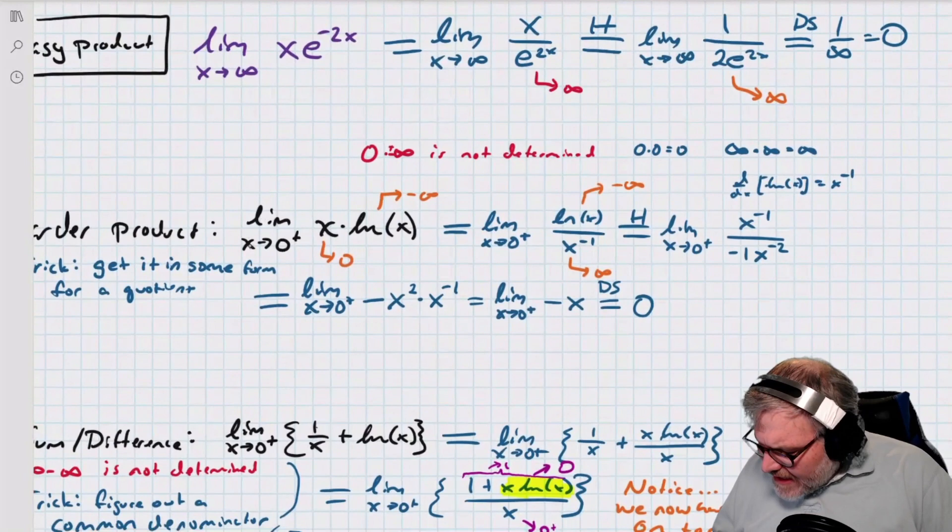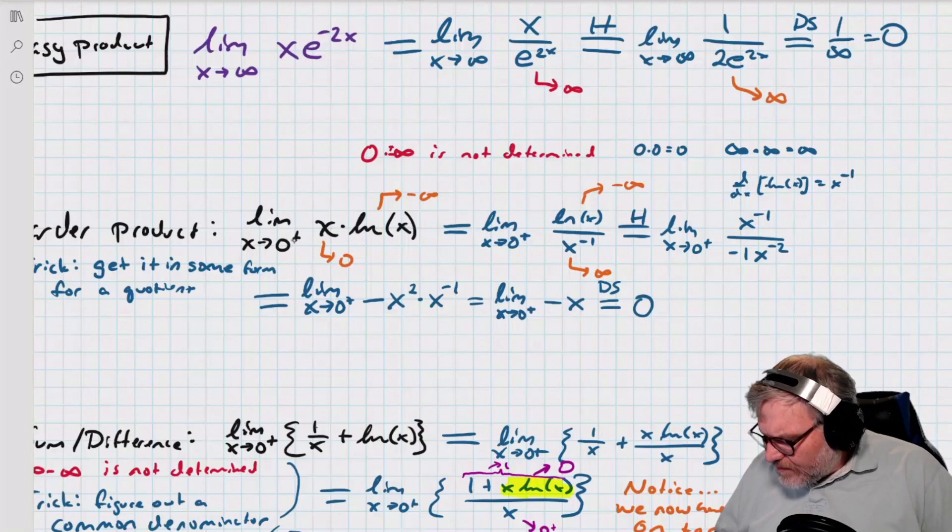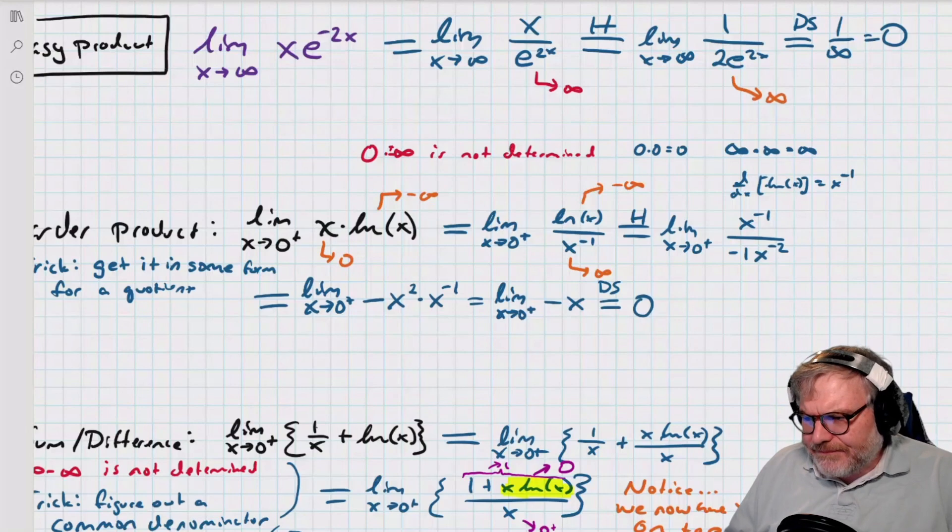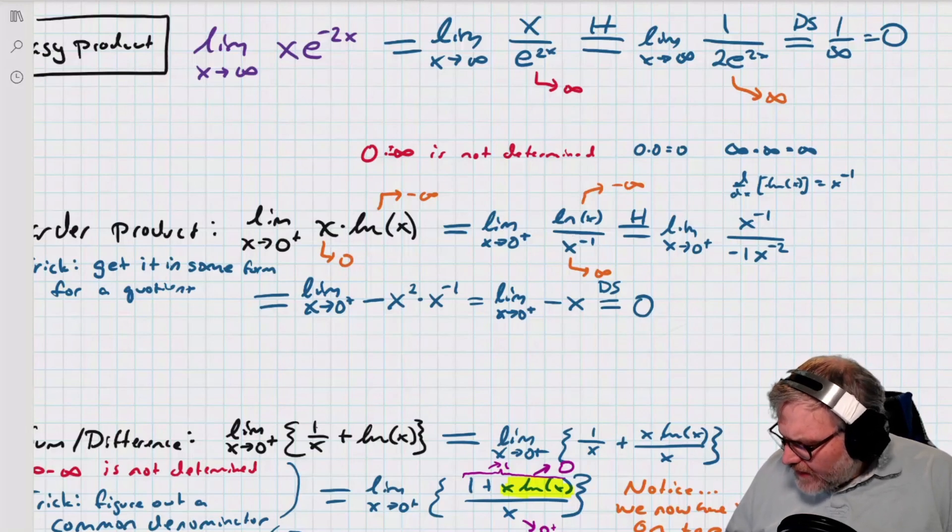And the trick is to find some kind of quotient. So if I've got the limit as x goes to 0 plus of x times ln of x. This piece here goes to negative infinity, this here goes to 0. Now, I could put either one on the bottom. So I could put x on the bottom as x to the negative 1, or I could put ln of x on the bottom as ln of x to the negative 1.